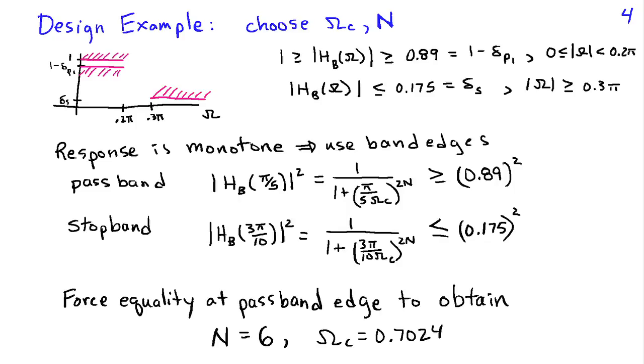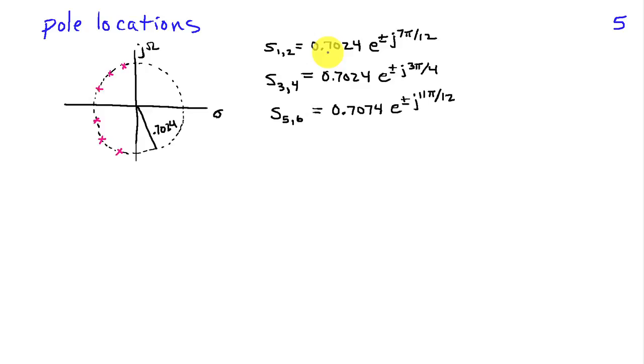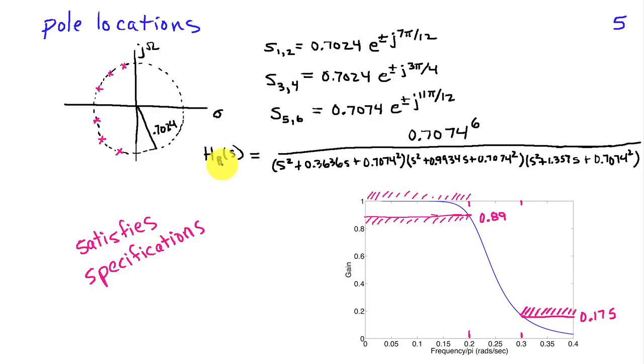So, using our formula for the pole locations, we see they're at a circle of radius 0.7024. They are going to be spaced by 30 degrees, and there'll be 6 of them in the left half plane, because n is equal to 6. So, it turns out that they're located at angles of plus or minus 7 pi over 12 radians, also at plus or minus 3 pi over 4 radians, and then at plus or minus 11 pi over 12. We can multiply this out to get a filter transfer function, Hb of s, that's going to have omega c to the sixth power in the numerator, and then in the denominator, we have three quadratic terms that are associated with each of the pairs of poles that occur in complex conjugates.